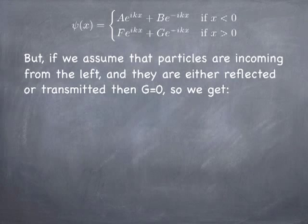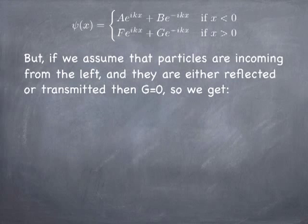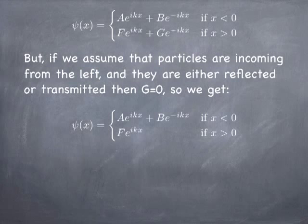Generally, in an experimental setup, we would have a particle beam coming from one direction. Particles would either scatter off the potential or be transmitted through it, but that means there would be no particles coming from the right of the potential heading left. So the g term in this expression would be zero. We can rewrite our wave function everywhere but at the origin as a right and left traveling wave to the left of the potential, and only a right traveling wave to the right.